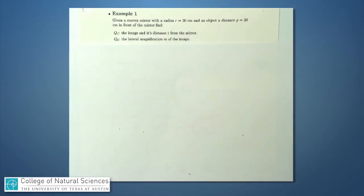So let me read this out loud. Given a convex mirror with a radius r is 30 centimeters and an object distance p is 20 centimeters in front of the mirror, please find: number one, the image distance from the mirror, and two, the lateral magnification m of the image.